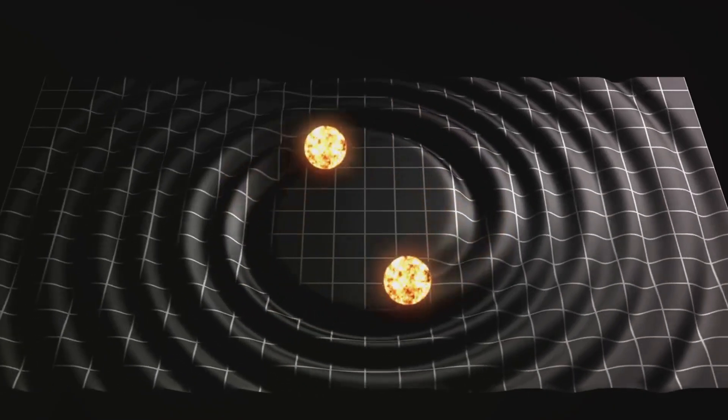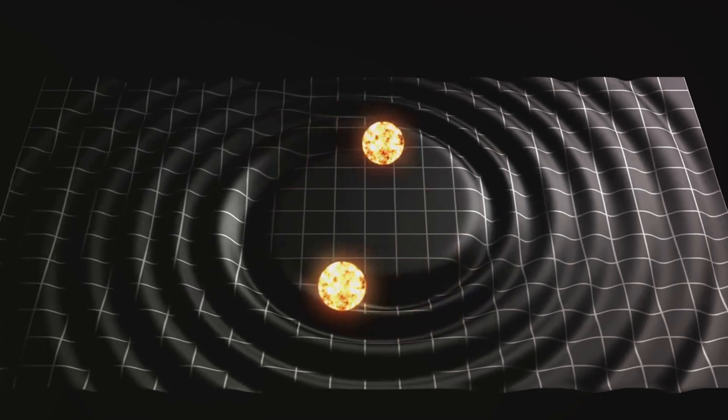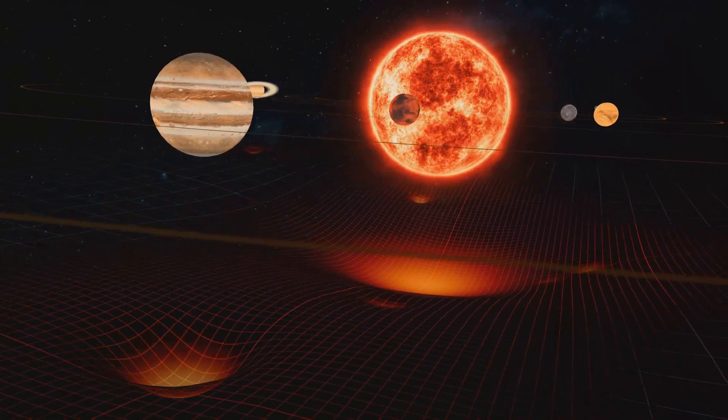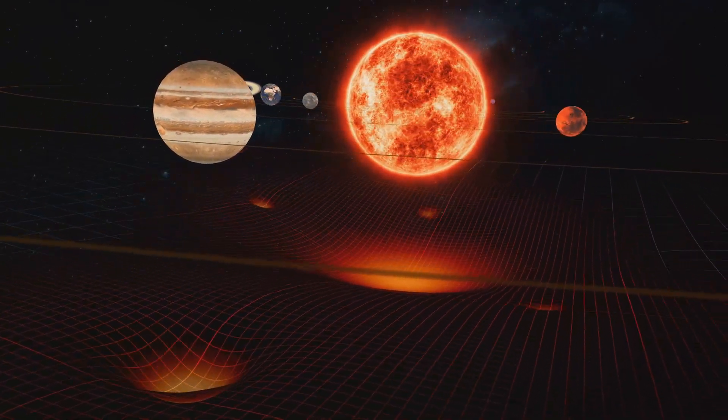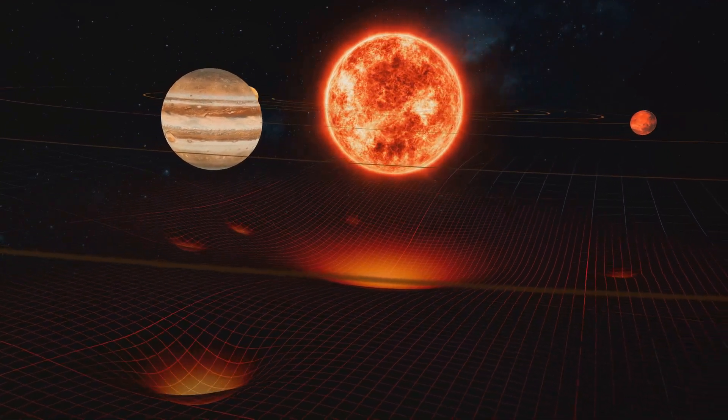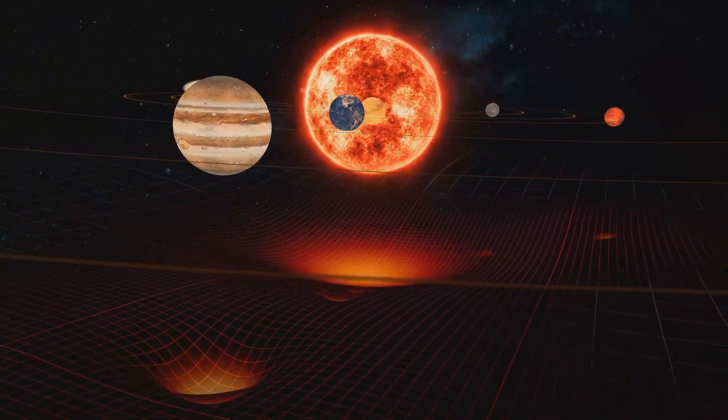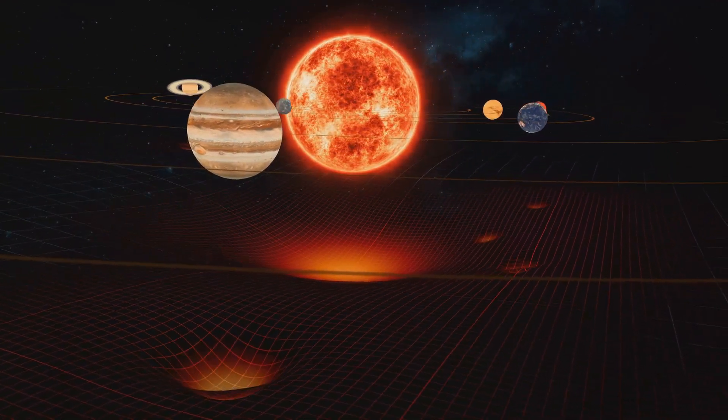A binary star system, in essence, is a stellar system that comprises two stars orbiting around their common center of mass. This celestial dance is made possible by the gravitational forces between the two stars, much like the pull between the Earth and the Moon.